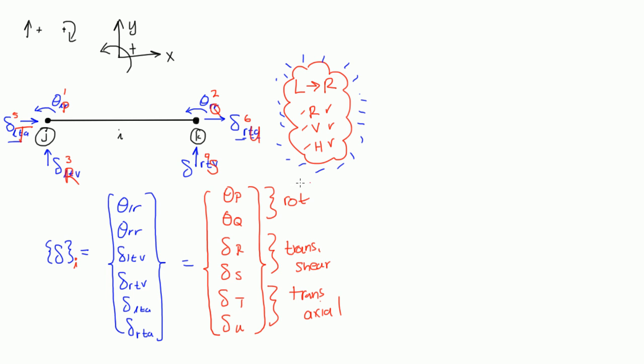So this is kind of an introduction to the degrees of freedom. The big concept here is the sign convention and then also when we label degrees of freedom, so we always go from left to right, and we always do rotation first, vertical, and horizontal. In the next video, we're going to talk about these degrees of freedom a little bit more in depth. Alright, see you then.